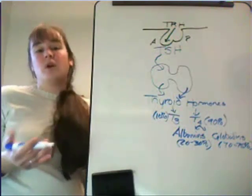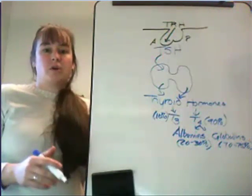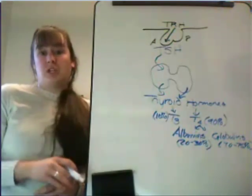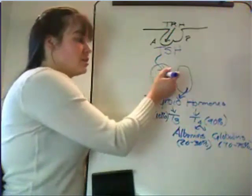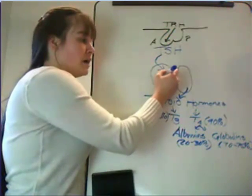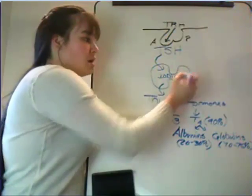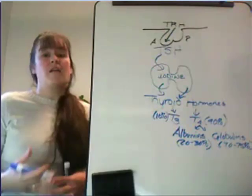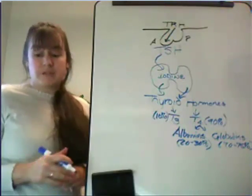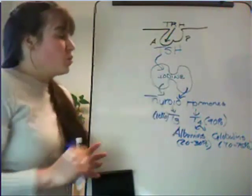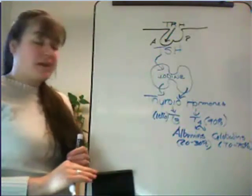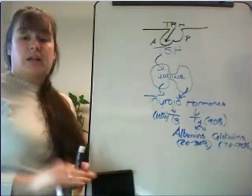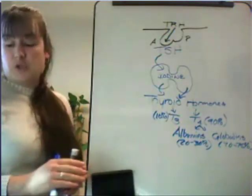T3 and T4 include the word iodine in them — triiodo or tetraiodo indicates how many iodines are connected to these thyroid hormones. This means that iodine is a very important mineral that must be present inside the thyroid gland in order to get adequate secretion of T3 and T4. So for this system to work well, we need iodine in the thyroid gland, as well as thyroid stimulating hormone reaching the thyroid gland, and the thyroid gland must be sensitive to these hormones.